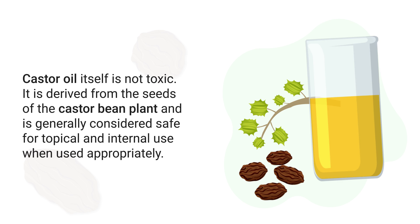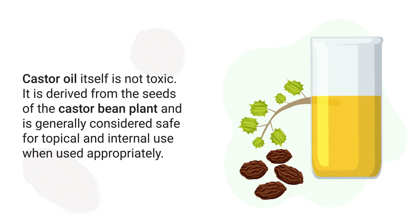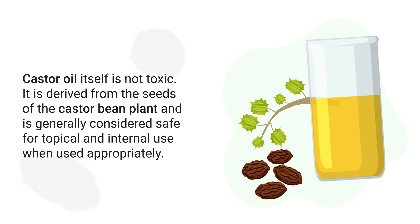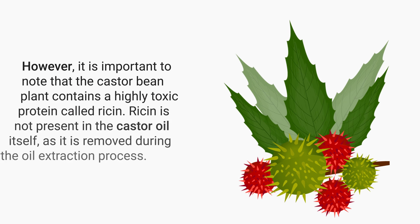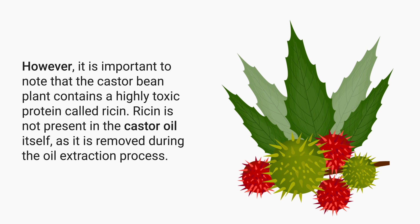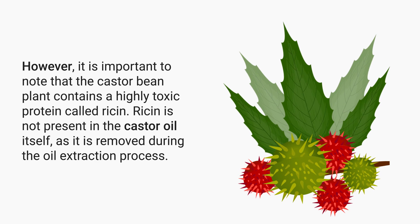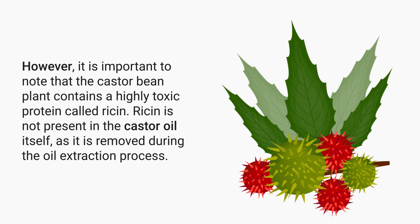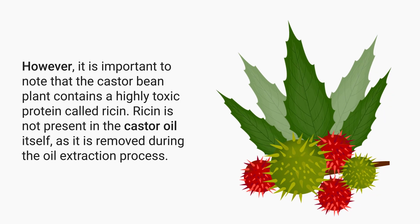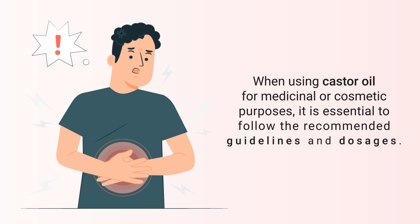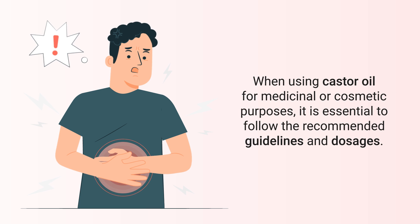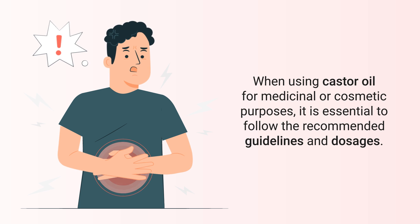Castor oil itself is not toxic — it is derived from the seeds of the castor bean plant and is generally considered safe for topical and internal use when used appropriately. However, it is important to note that the castor bean plant contains a highly toxic protein called ricin. Ricin is not present in the castor oil itself, as it is removed during the oil extraction process. When using castor oil for medicinal or cosmetic purposes, it is essential to follow the recommended guidelines and dosages.